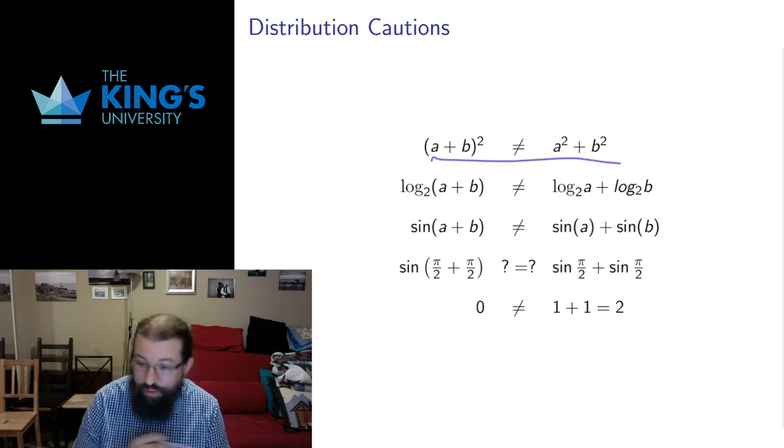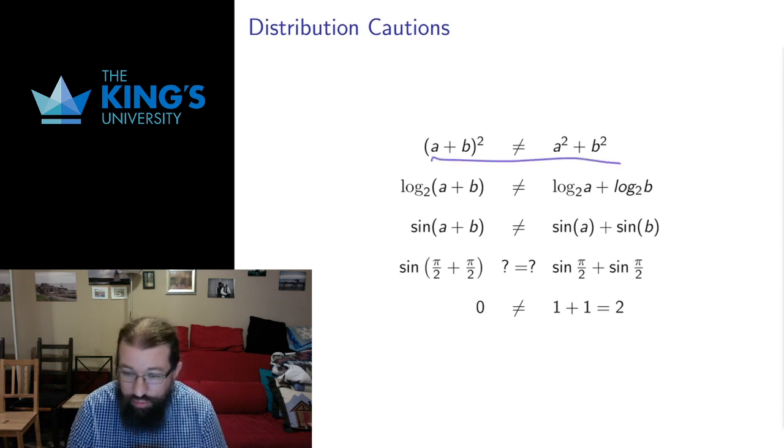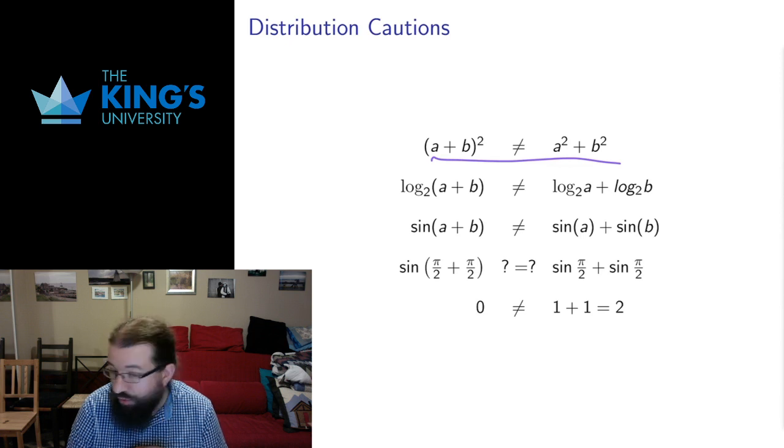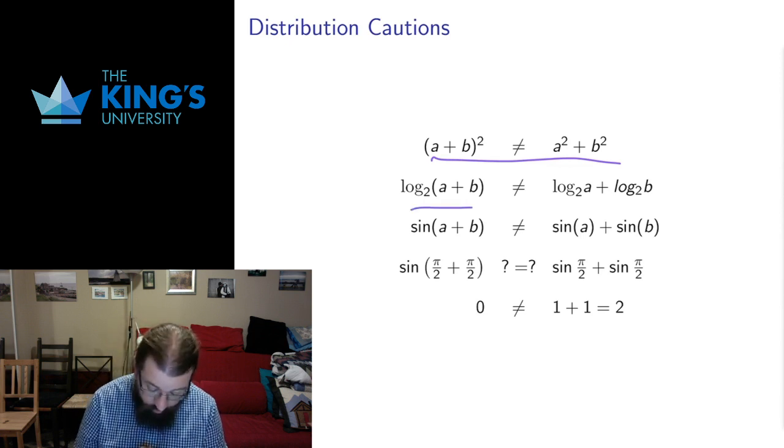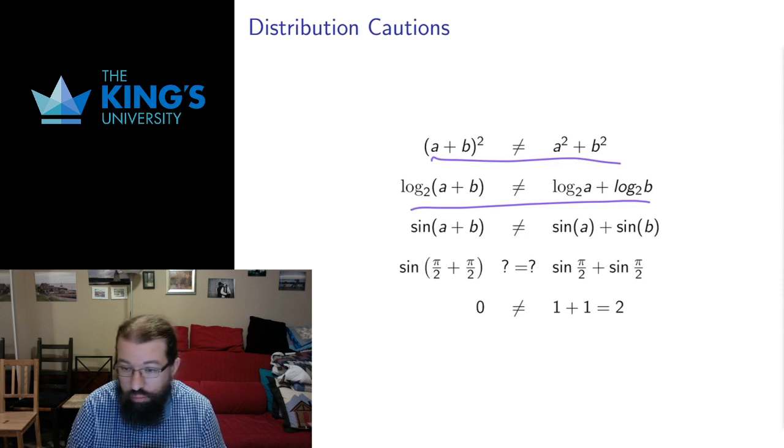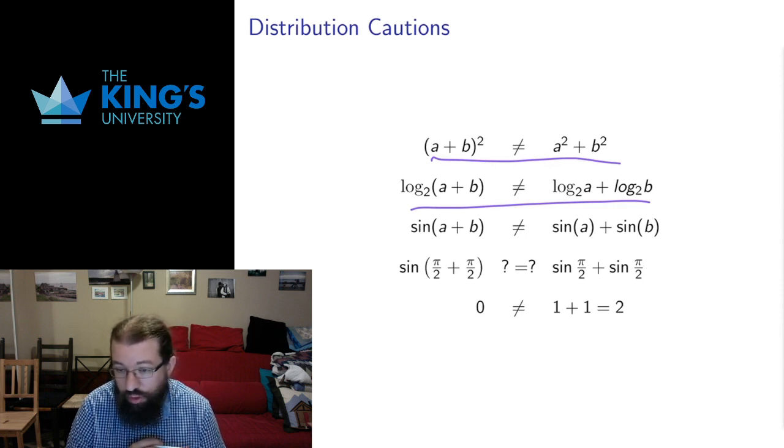In general, all exponents don't distribute. a plus b squared is not the same thing as a squared plus b squared. Logarithms don't distribute. If you take a logarithm of the sum, it's not the same as the sum of the logarithms. Trig functions don't distribute. Sine of a plus b is not sine of a plus sine of b.